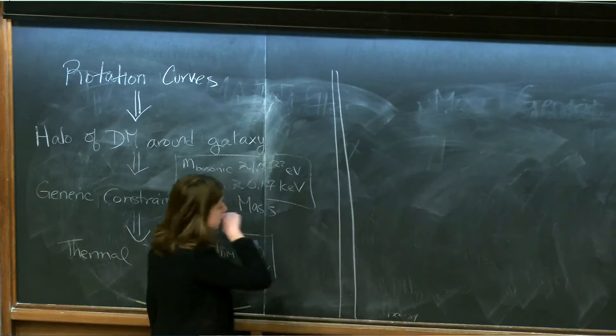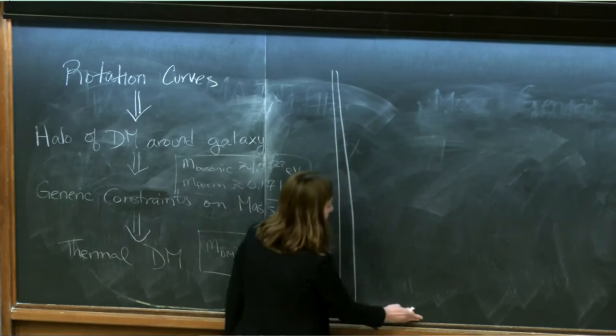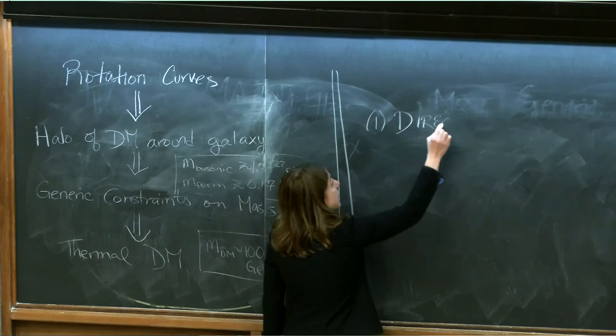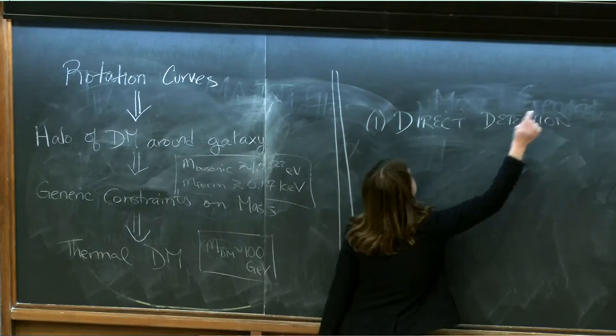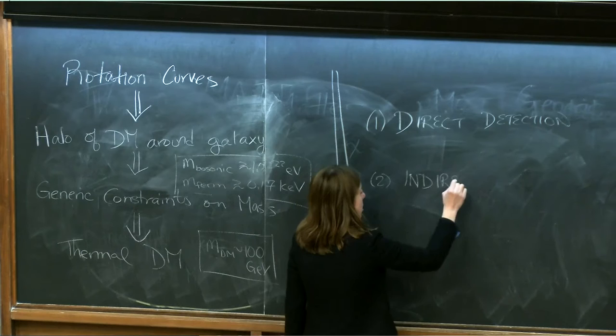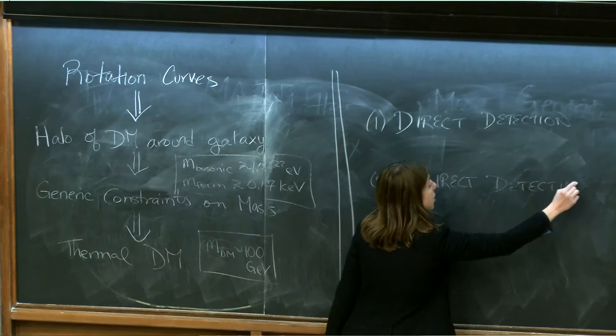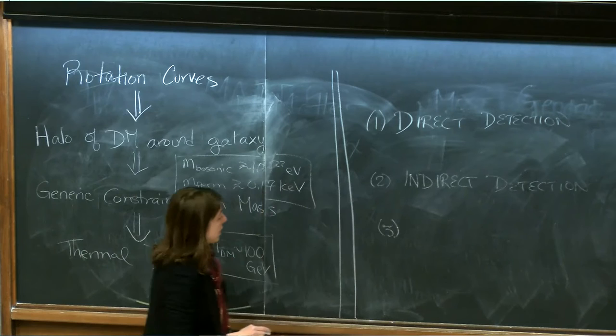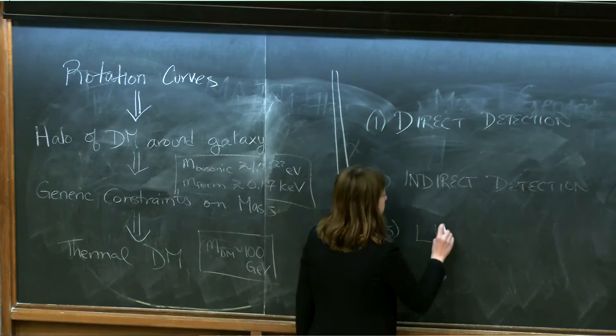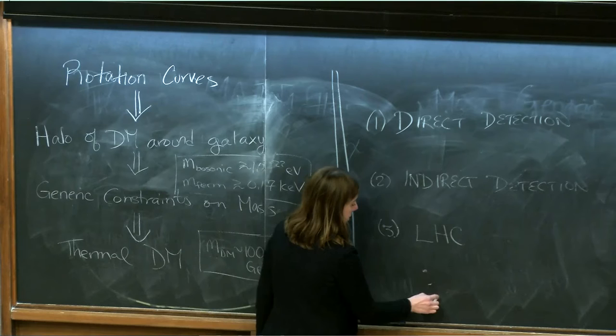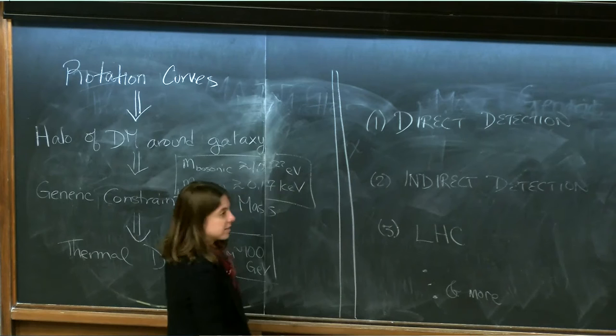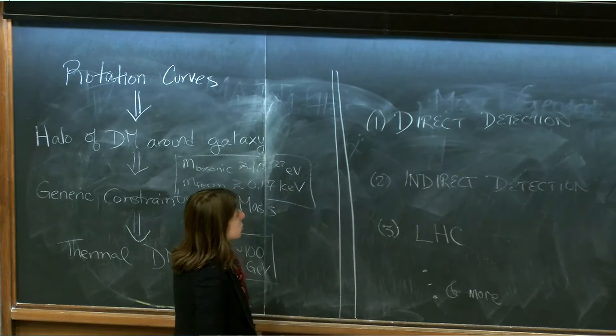There are two sets of experiments I'm going to try to get to in the next hour. The first is called direct detection, and the second is called indirect detection. There's a lot more than just this — in particular, one category I probably won't have time for is LHC searches, but we can discuss that in the session if there's interest. I'm only covering two due to limitations of time, not because these are the only possibilities.